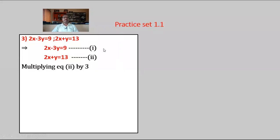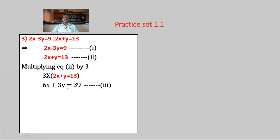The coefficients of x are already equal in both equations with the same sign. We can also equate the coefficient of y. The coefficient of y in equation 1 is minus 3, and in equation 2 it is plus 1. To equate the coefficients of y, multiply equation 2 by 3: 3 times (2x plus y equals 13) gives 6x plus 3y equals 39 — equation number 3.